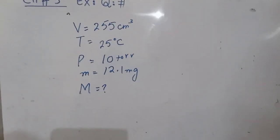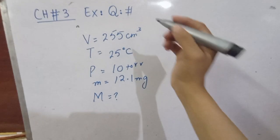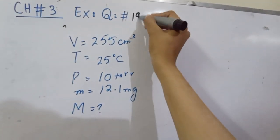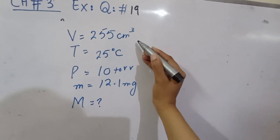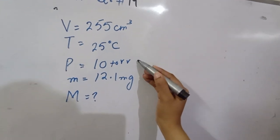Assalamu alaikum. Question number 19 from exercise of chapter 3: A gas has volume 255 centimeter cube, temperature 25 degrees Celsius, pressure is given,